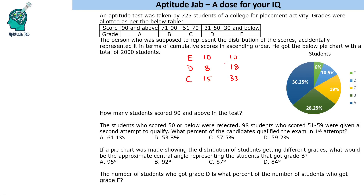He made a mistake in representing the data and got the below pie chart with a total of 2000 students. We know that there are 725 students, but the pie chart he made using the incorrect representation had 2000 students. A couple of questions from this are very simple and can be answered easily from this pie chart.